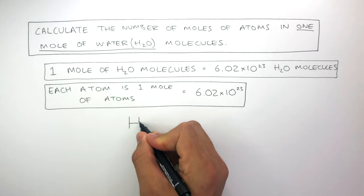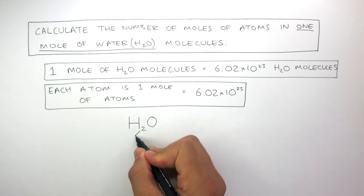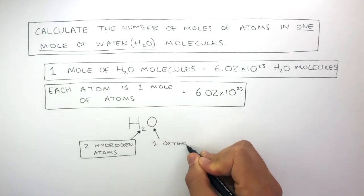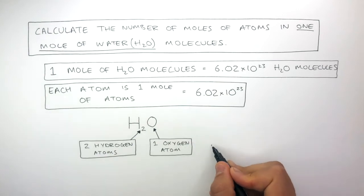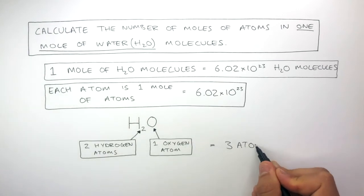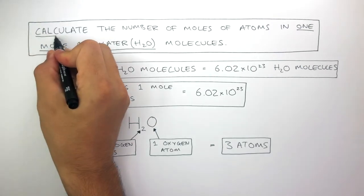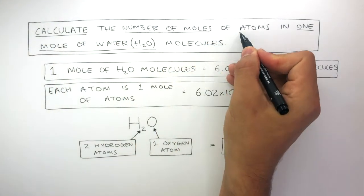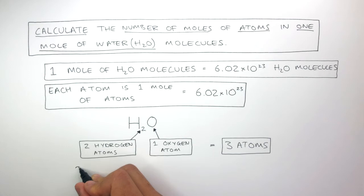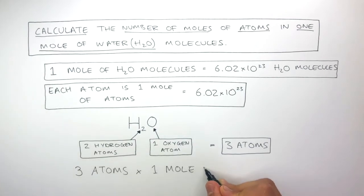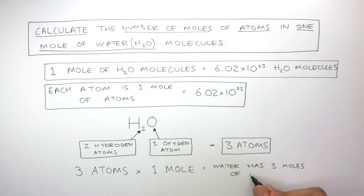In the H₂O molecule, there are two hydrogen atoms and one oxygen atom, so in total there are three atoms. Because the question asks us to calculate the number of moles of atoms, we do three atoms times one mole. This means that water has three moles of atoms.